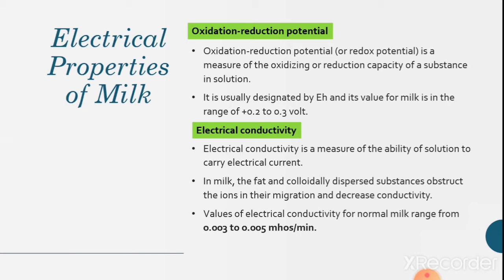Electrical conductivity. This is the electrical property of the milk. Electrical conductivity is a measure of the ability of solution to carry electrical current. In milk, the fat and colloidally dispersed substances obstruct the ions in their migration and decrease conductivity. Values of electrical conductivity for normal milk range from 0.003 to 0.005 mho per minute.